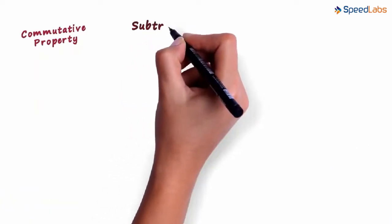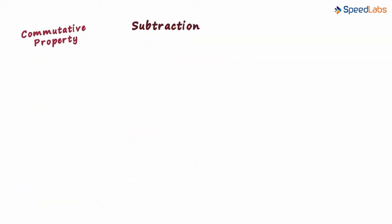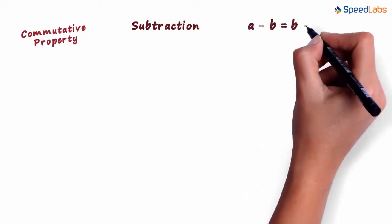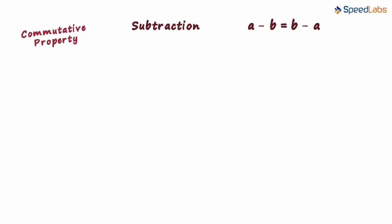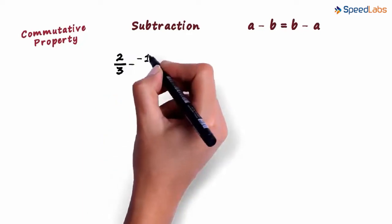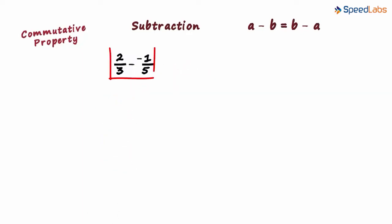Let's move on to the next operation now. Subtraction. To know if it's valid for subtraction, we just check if a minus b equals b minus a. We consider two random rational numbers again. Let us try out 2 by 3 minus minus 1 by 5. This is of the form a minus b. First, we find this result and then see the result of this minus this.